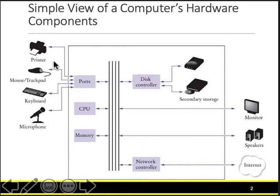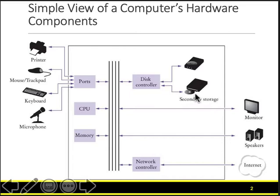Ports connect your printers, Ethernet, internet, and other devices. They're all connected through a system bus, which also has different types of controllers connected to it. Those controllers can connect your secondary storage, CD drives, hard disks, speakers, monitor — everything can be connected through ports and through this bus.